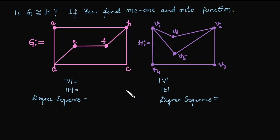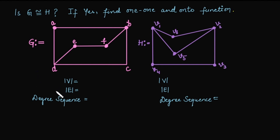Isomorphic graph part 2 question: is graph G isomorphic to graph H? If yes, find a one-to-one and onto function. First we will count the number of vertices and edges, and then the degree sequence. If all the things are same then we will start building the mapping. In graph G it has six vertices.